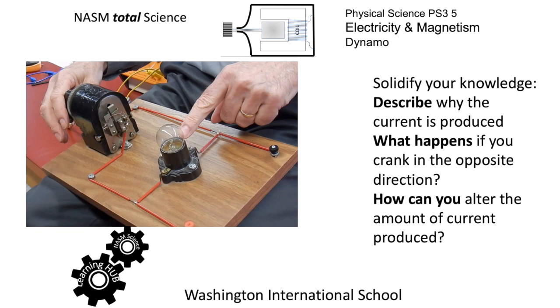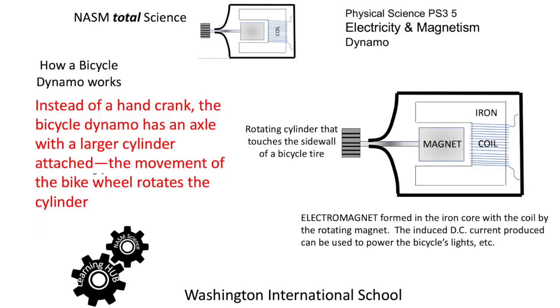Solidify your knowledge: Describe why current is produced by a dynamo. What happens if you crank in the opposite direction? How can you alter the amount of current produced - maybe get a brighter light or a dimmer one? Other dynamos include the bicycle dynamo.